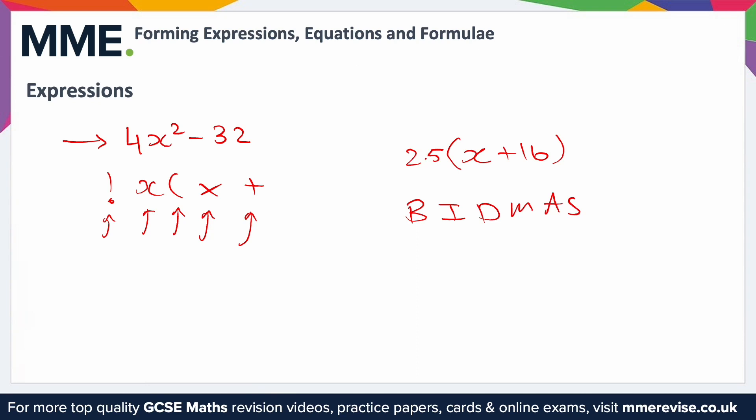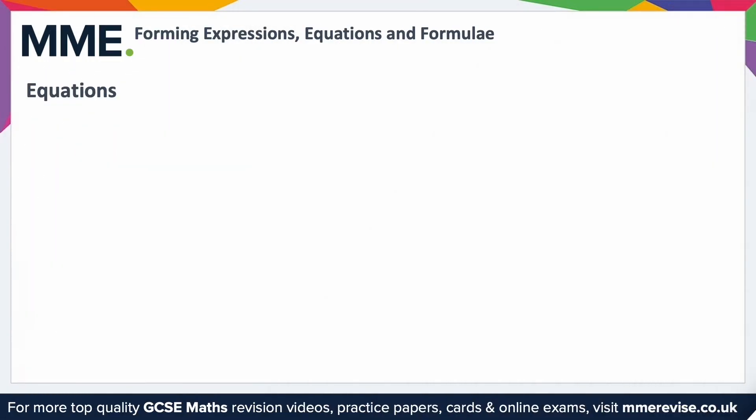If instead I just wrote it as 2.5 without brackets, to use this expression I would do two and a half times x and then add 16, which isn't what we originally wanted to do. We wanted to add 16 and then times by two and a half.